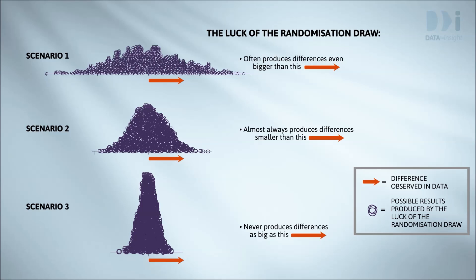What can we conclude from that? In this top one, the luck of the randomization draw alone can easily make differences even bigger than this. There's no evidence that there's a real difference between the groups. At the bottom, the luck of the randomization draw can't make something that big. We have conclusive evidence that there's a real difference. But what about the middle one? Re-randomization hardly ever makes differences that big, so surely we have some sort of evidence of a true difference.